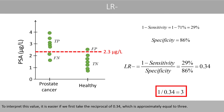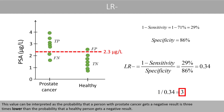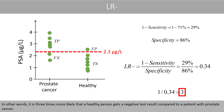To interpret this value, it is easier if we first take the reciprocal of 0.34, which is approximately equal to 3. This value can be interpreted as: the probability that a person with prostate cancer gets a negative result is 3 times lower than the probability that a healthy person gets a negative result. In other words, it is 3 times more likely that a healthy person gets a negative test result compared to a patient with prostate cancer.